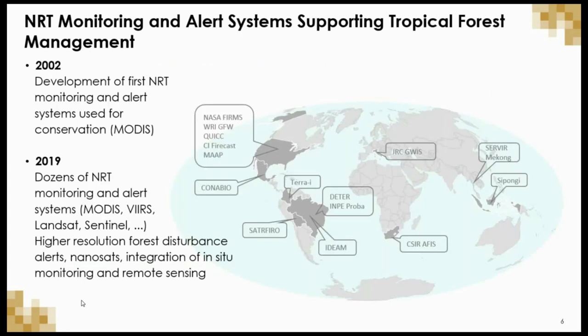The history of near real-time monitoring and alert systems for tropical forest management dates back to the early 2000s with the first system using MODIS data. Fast forward to 2019, and there are dozens of such systems operating in multiple countries, developed using data from multiple different satellites. This map highlights some of the systems available in country.